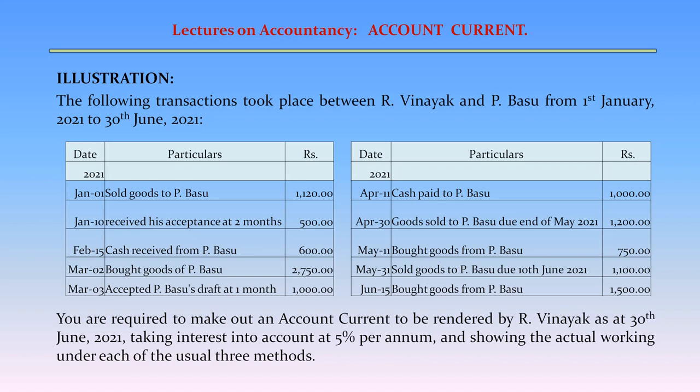March 2: Bought goods of P. Basu – Rs. 2,750. March 3: Accepted P. Basu's draft for one month – Rs. 1,000. April 11: Cash paid to P. Basu – Rs. 1,000. April 30: Goods sold to P. Basu, due end of May – Rs. 1,200.